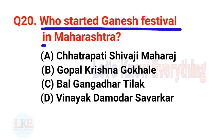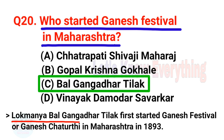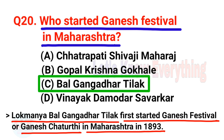Question number 20: Who started the Ganesh Festival in Maharashtra? A. Chhatrapati Shivaji Maharaj, B. Gopal Krishna Gokhale, C. Bal Gangadhar Tilak, D. Vinayak Damodar Savarkar. You should know the right answer as it has appeared many times in competitive exams. The right answer is option C, Bal Gangadhar Tilak. Lokmanya Bal Gangadhar Tilak first started Ganesh Festival or Ganesh Chaturthi in Maharashtra in 1893.